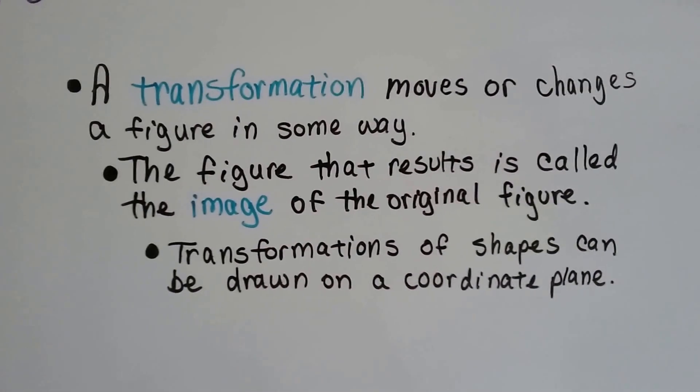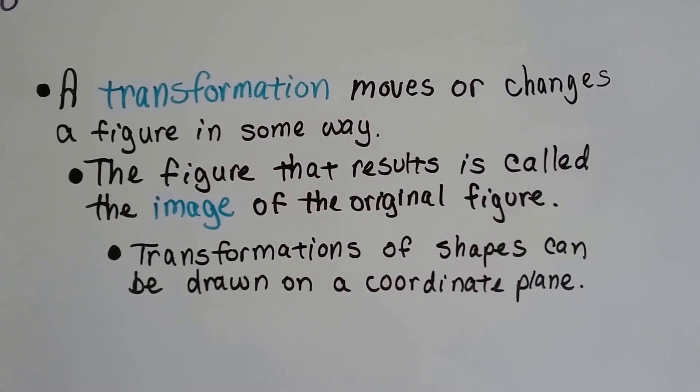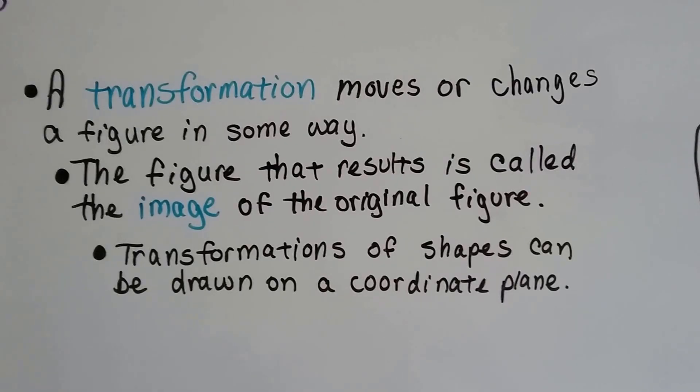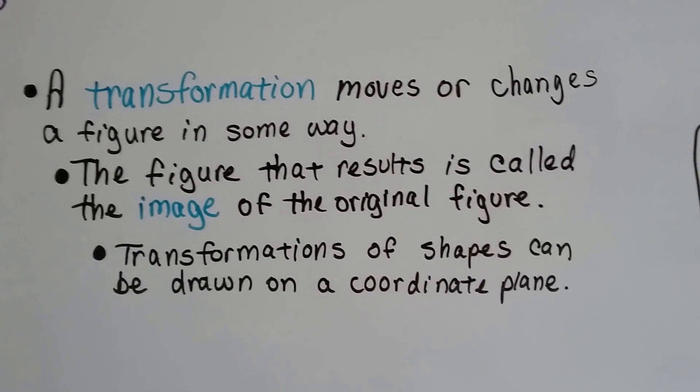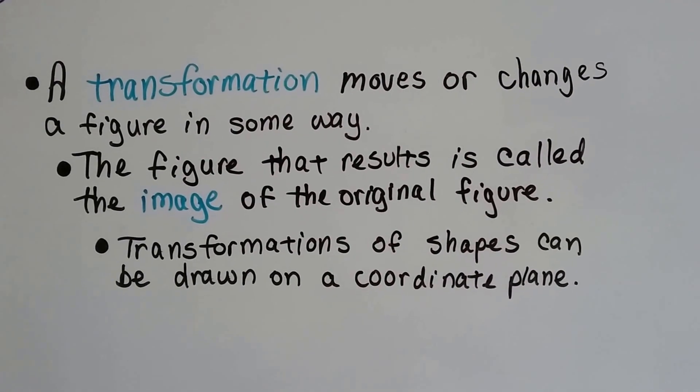A transformation moves or changes a figure in some way. The figure that results is called the image of the original figure. And transformations of shapes can be drawn on a coordinate plane.